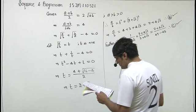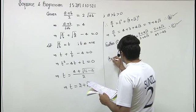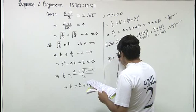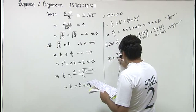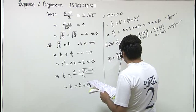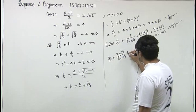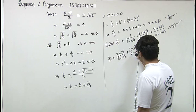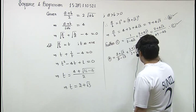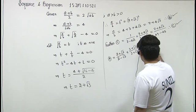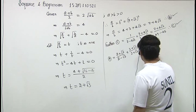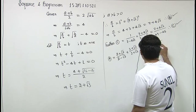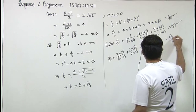Further checking option A, which is 2 plus root 3 upon 2 minus root 3. On rationalizing this, multiplying 2 plus root 3 and dividing also, we have 4 plus 2 root 3 plus 3 upon 4 minus 3. That means option A is also correct.